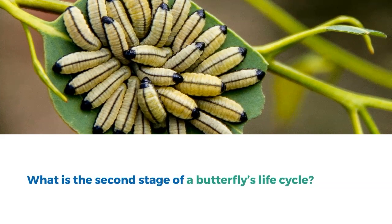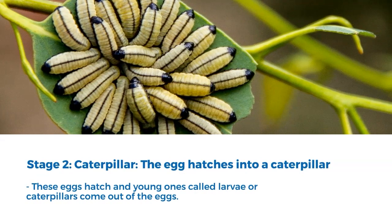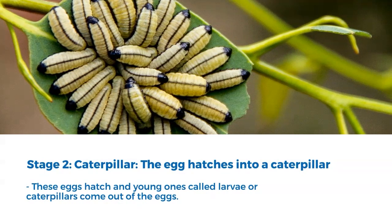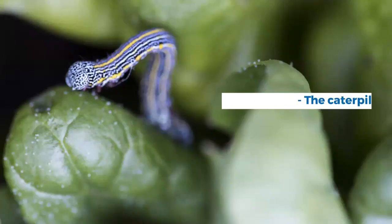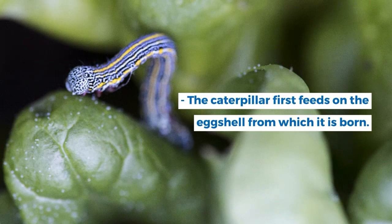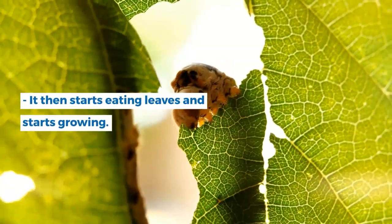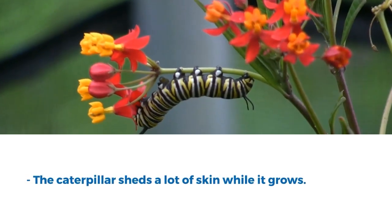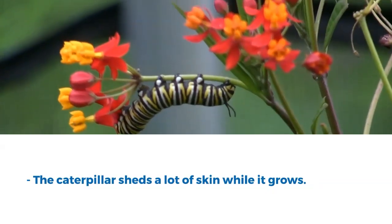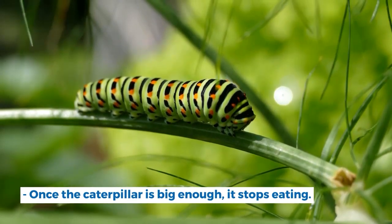Stage 2: Caterpillar. The egg hatches into a caterpillar. These eggs hatch and the young ones, called larvae, come out. The caterpillar first feeds on the eggshell from which it is born, then starts eating leaves and growing. The caterpillar sheds a lot of skin while it grows. Once the caterpillar is big enough, it stops eating.